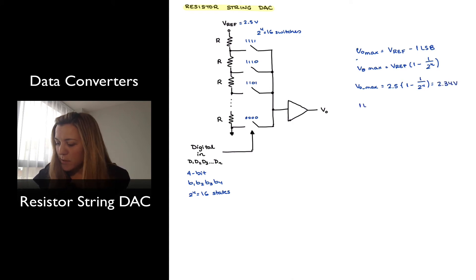In that case, my 1 LSB will be equal to VREF divided by 2 to the N, or 2.5 divided by 2 to the 4, which will be equal to 0.0625 volts.